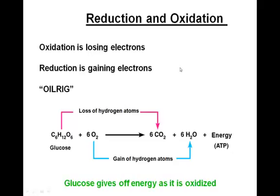In the process of cellular respiration, we encounter a number of redox reactions — reduction and oxidation reactions. Oxidation is the process of losing electrons; reduction is the process of gaining electrons. You can remember this with the phrase 'OIL RIG': Oxidation Is Losing, Reduction Is Gaining. In our chemical formula, the glucose molecule undergoes a loss of hydrogen atoms and is oxidized down to CO2, while the oxygen molecule gains electrons and is reduced to water. Glucose gives off energy as it is oxidized.